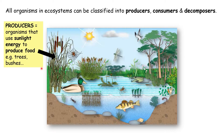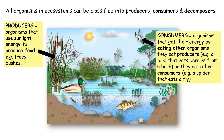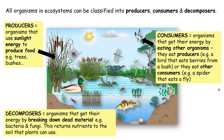Consumers are things that eat other things. So a bird that eats a berry is a consumer, but also a spider that's eating a fly — that's also a consumer. Finally we have decomposers. These are things like bacteria and fungi that break down dead material within the ecosystem.